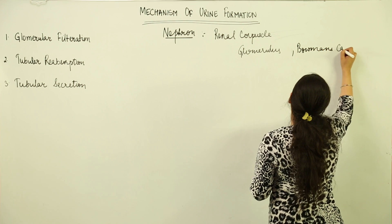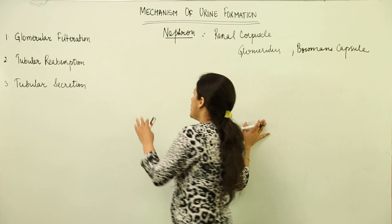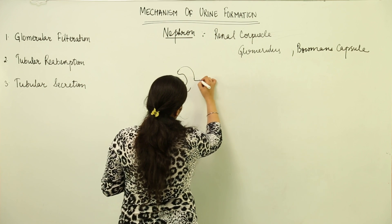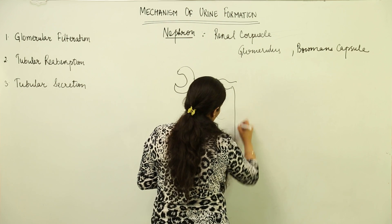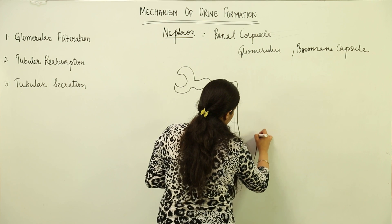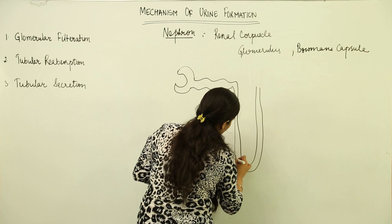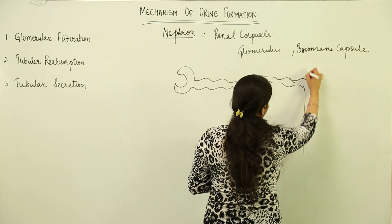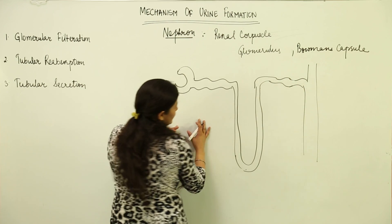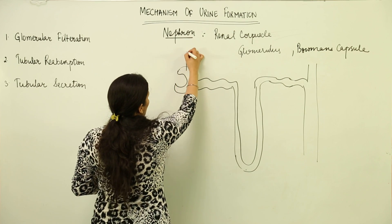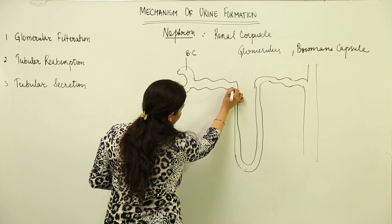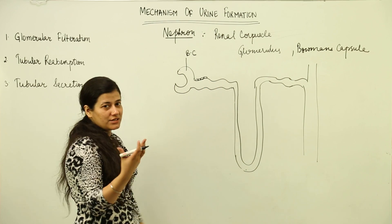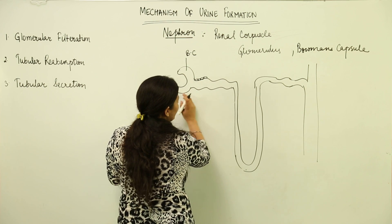If we represent the nephron in the simplest possible way, it would look like a hairpin structure, followed by the distal convoluted tubule connected to the collecting duct. This is Bowman's capsule, and the entire remaining part is a tube-like structure. This tube is lined by cuboidal epithelium, which has the ability to both secrete and absorb substances.